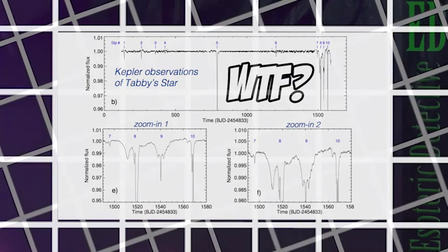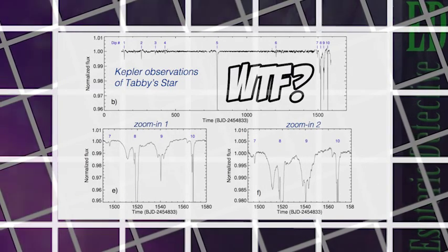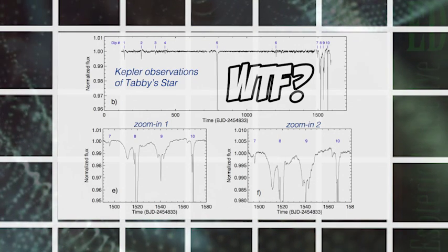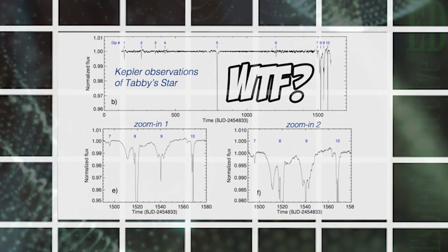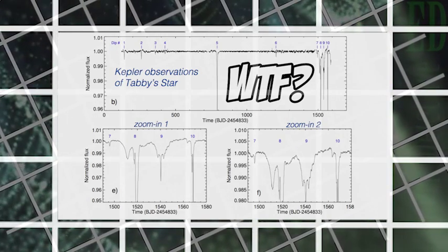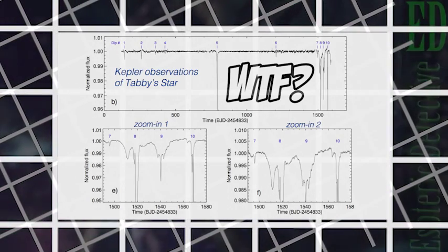The Planet Hunter citizen scientists noticed that it was getting dim by large amounts, far too much to be explained by a planet. And it was doing so in very irregular ways, it wasn't happening periodically, and the dimming and brightening patterns didn't match any other known star.